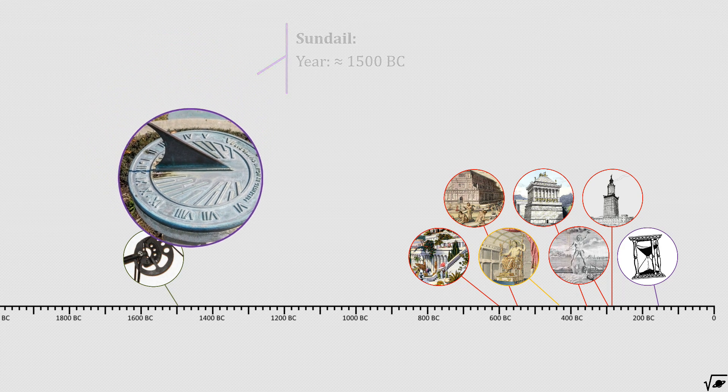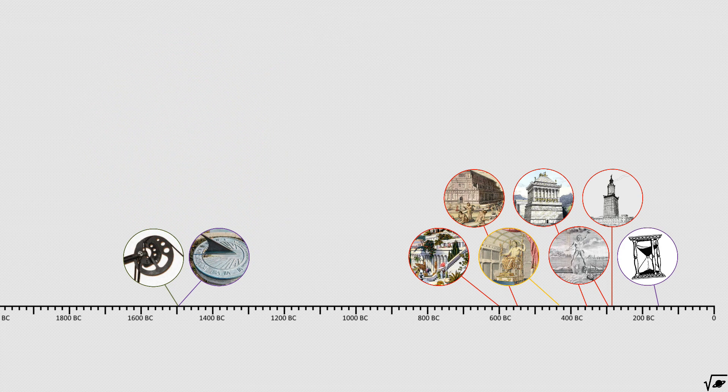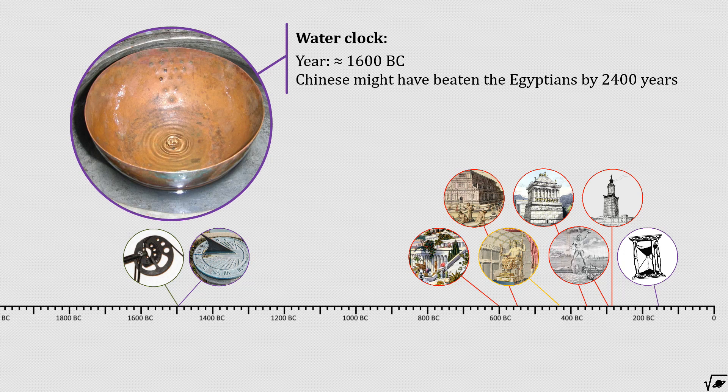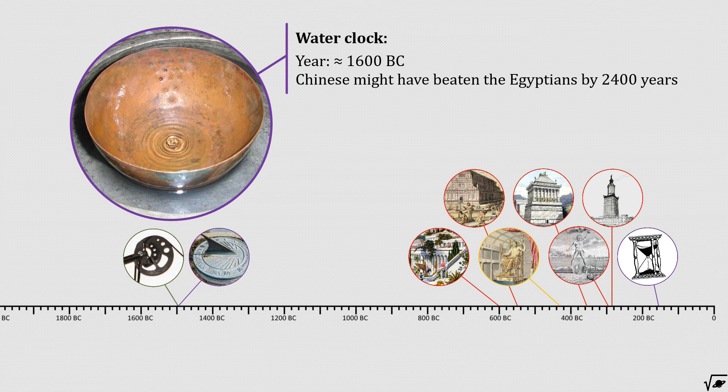And under some conditions the highly inaccurate water clock, invented 100 years earlier. Although some say that the water clocks already appeared in China as early as 4000 BC.